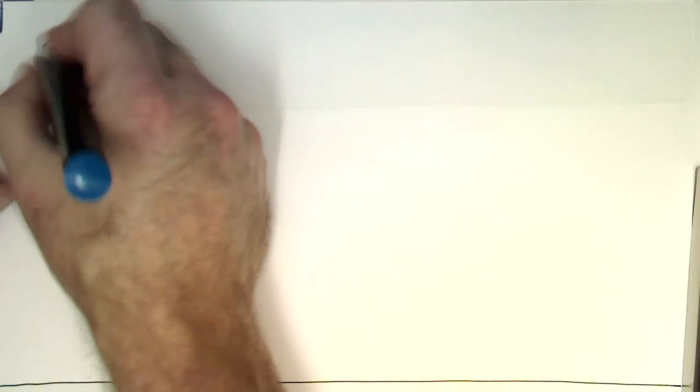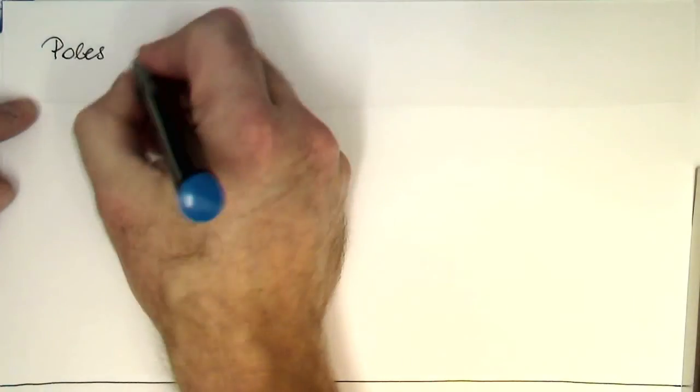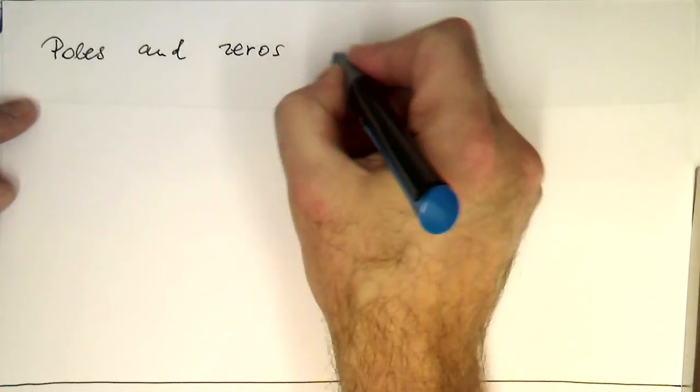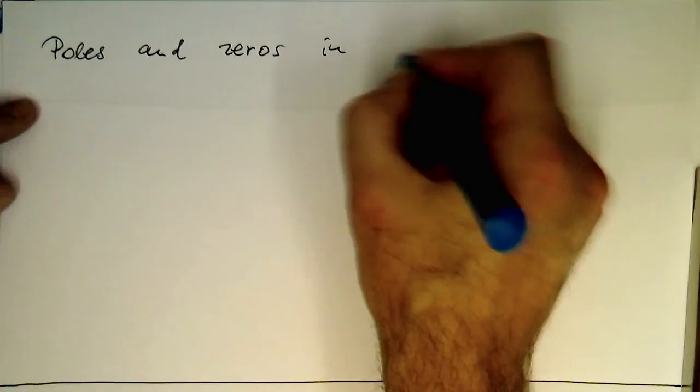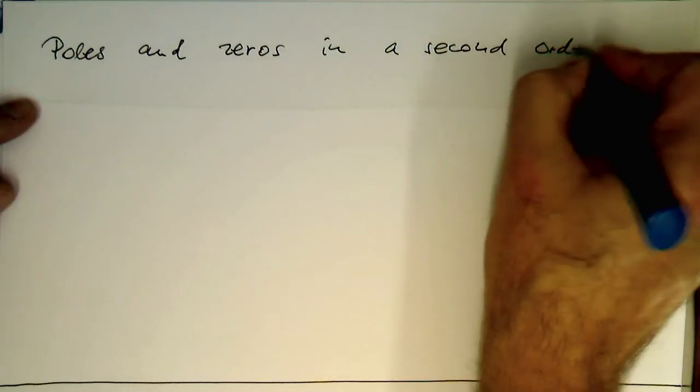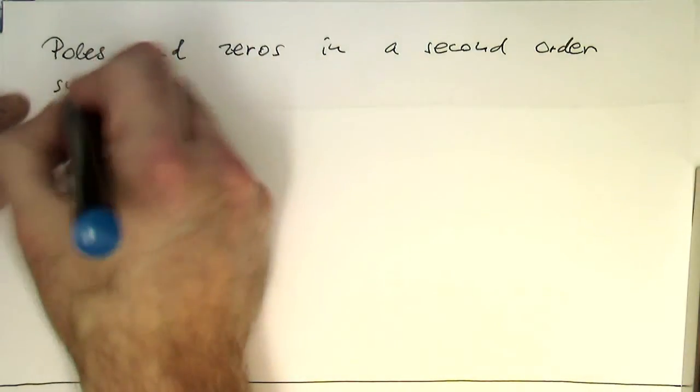So now, let's look at poles and zeros in a second-order system in a general case. Poles and zeros in a second-order system.